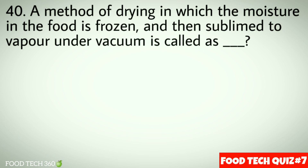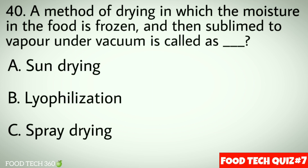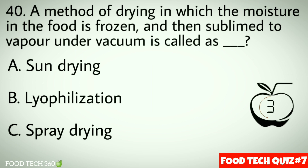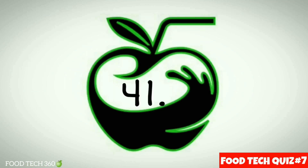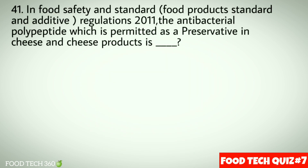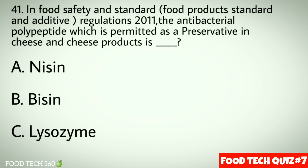Question number 40: A method of drying in which the moisture in food is frozen and then sublimed to vapour under vacuum is called — options: a) Sun drying, b) Lyophilization, c) Spray drying. Correct answer: b) Lyophilization. Question number 41: In Food Safety and Standards Regulation 2011, the antibacterial polypeptide permitted as a preservative in cheese and cheese products is — options: a) Nisin, b) Bisin, c) Lysozyme. Correct answer: a) Nisin.